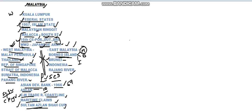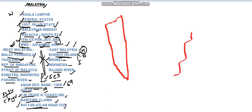Now we shall go into the mapping of the country. First we shall give an outline to the western side and eastern side of Malaysia. Western Malaysia is present on the Malay Peninsula, which also extends northwards and southwards. Western Malaysia has got Thailand on its north and the Republic of Singapore — a small country at the southern tip of western Malaysia.